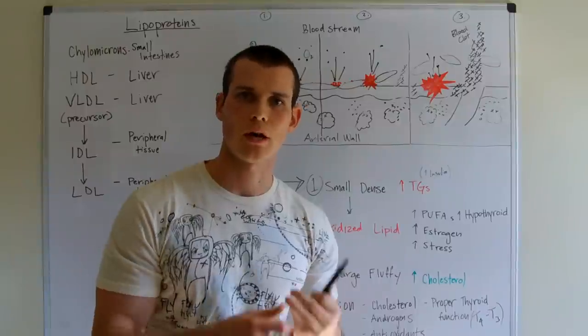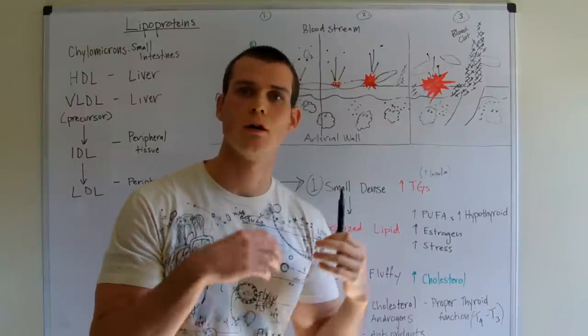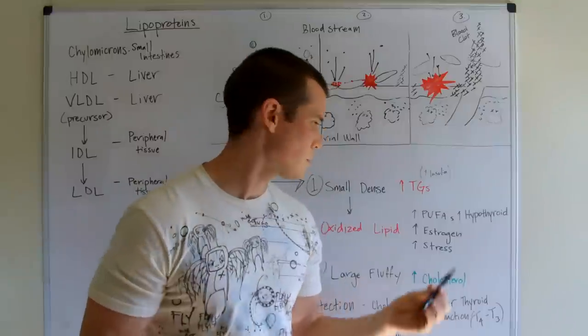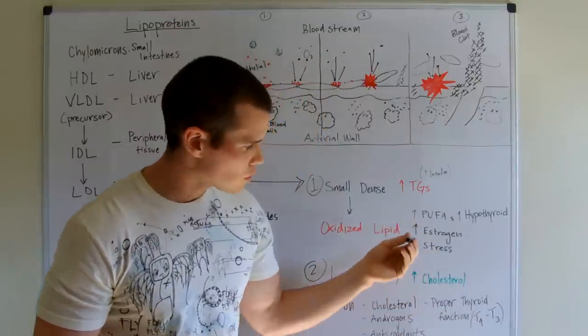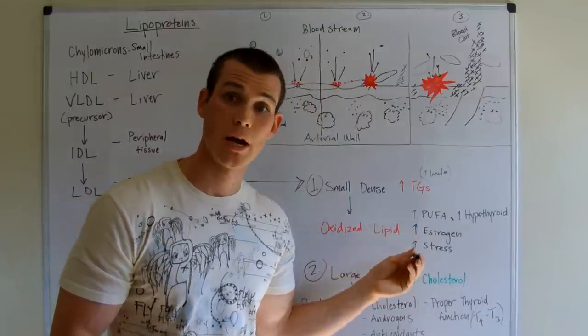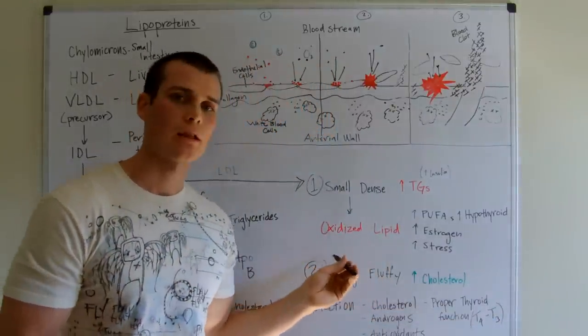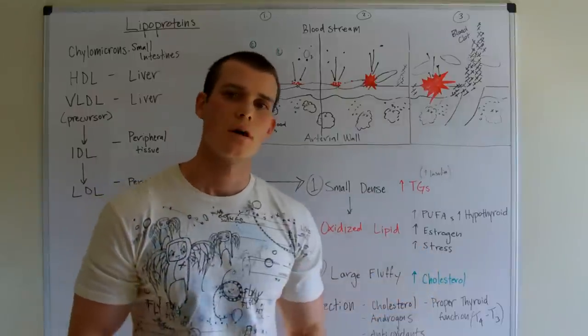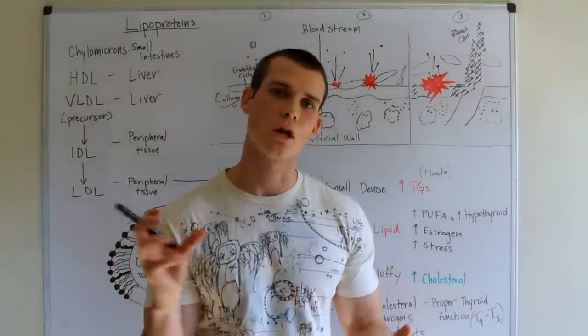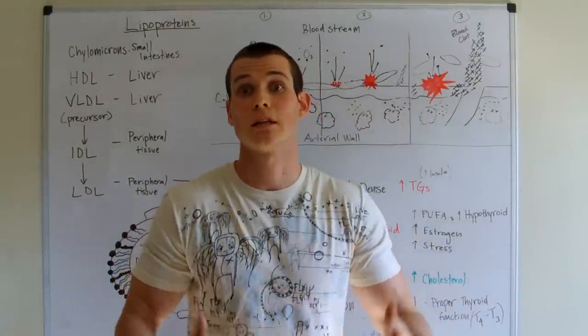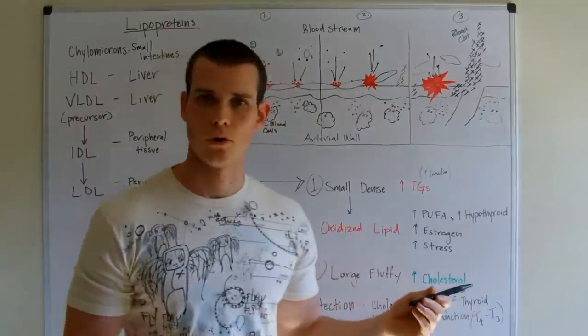So our vegetable oils like our corn, soy, canola, those vegetable oils that we're consuming, that's a bad thing. Also in the presence of estrogen, stress, and hypothyroidism, we're going to actually increase the likelihood of oxidized lipids. Hypothyroidism is actually going to slow the circulation, increasing the likelihood of this to occur.